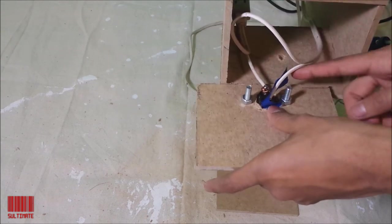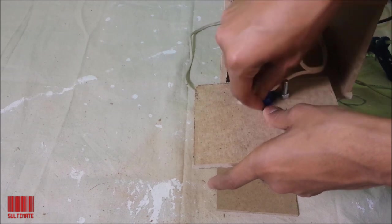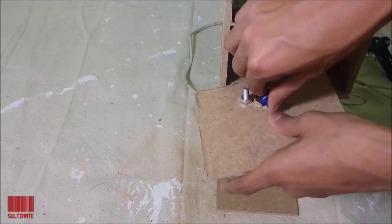I covered the exposed wiring with some electrical tape. Once everything was wired, I used a bead of hot glue to attach the switchboard to the soda dispenser.